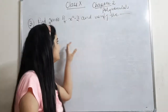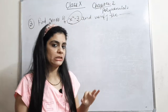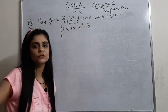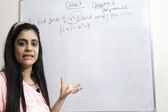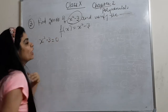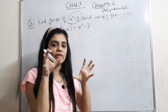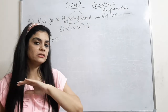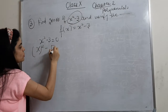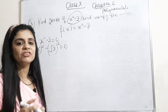The next example is Example 3: find the zeros of x² − 3 and verify the relationship between the zeros and its coefficients. For x² − 3 = 0, we cannot use the splitting method because there is no middle x-term — we only have x² and a constant, and 3 is not a perfect square, so splitting doesn't apply here.